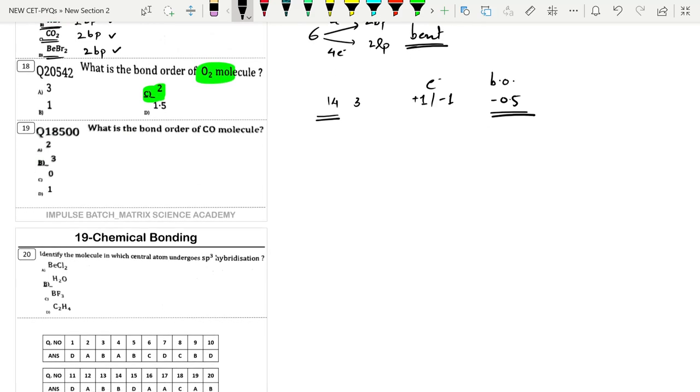Bond order for CO molecule. Carbon has 4 valence electrons, oxygen has 8 electrons, total is 14 electrons. 14 electrons give bond order 3. So for 14 electrons, bond order is 3.